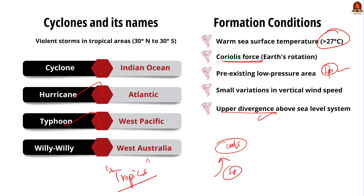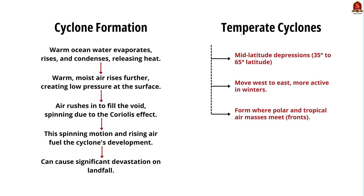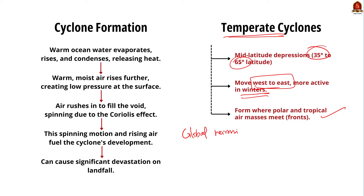Temperate cyclones occur in the mid-latitudes between 35° to 65°, driven by interactions between polar and tropical air masses creating fronts. They move from west to east and are more common during winter. Regarding the role of anti-cyclones in global warming: anti-cyclones, by circulating warm air, can affect temperature distributions and influence weather patterns. In the context of global warming, they can intensify heat waves or alter rainfall patterns, contributing to extreme weather events. Understanding their behavior helps predict climate system impacts, which is crucial for preparing and mitigating climate change effects.